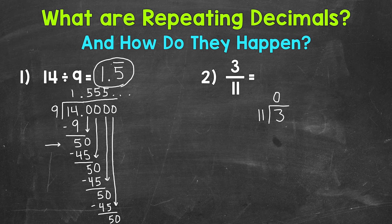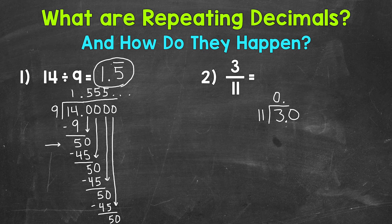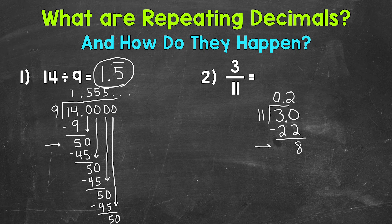In order to continue on and put this in decimal form, we need to place our decimal after the whole number and bring it straight up into our answer. Now we can use a placeholder zero to keep going, and we have 30 divided by 11. How many whole groups of 11 out of 30? Well, 2. 2 times 11 is 22. Subtract, we get 8. Remember, we want to look for a clean cut zero — that's when we know the decimal will terminate. We have an 8 here, so we need to continue on.